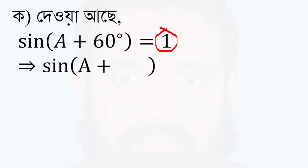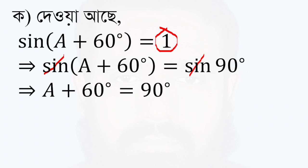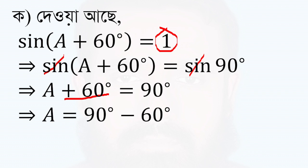So, sin(a + 60°) is equal to sin 90°. We have to find the value of a + 60° equal to 90°. Then we need to find the value of sin(a + 30°).